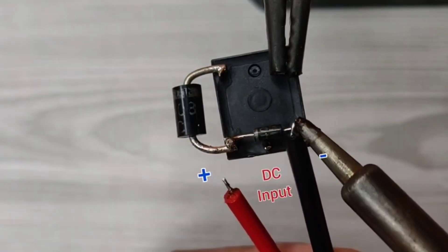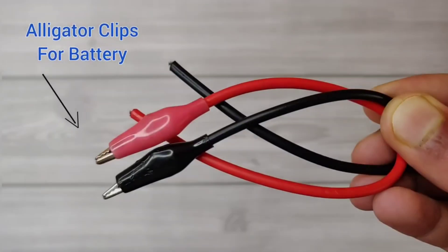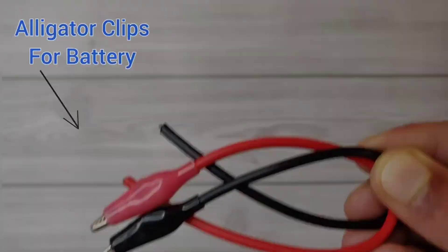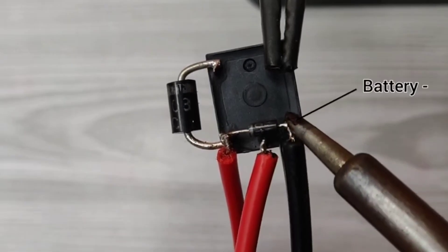Solder charger wires on coil pins. Take alligator clip wires for battery. Solder battery positive with COM pin and battery negative with coil pin 1.